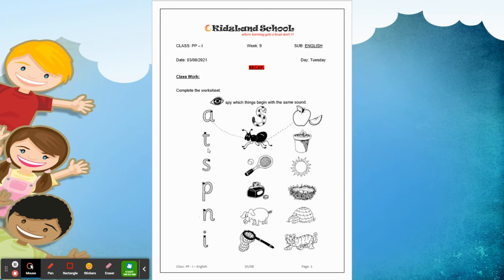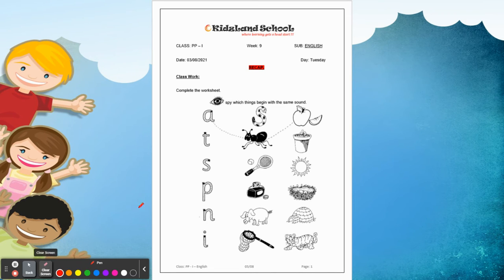The next letter is T. What is there here with T? You have to identify. T for tennis — draw a line. And T for tiger — do it from here, draw the line.